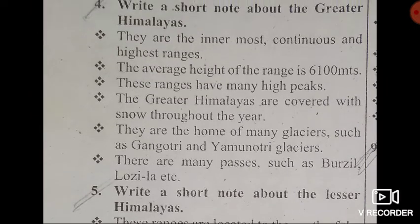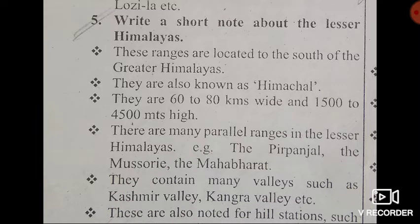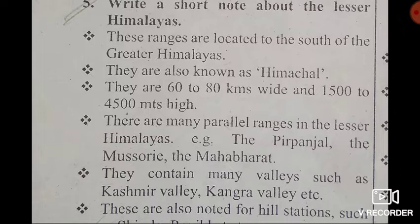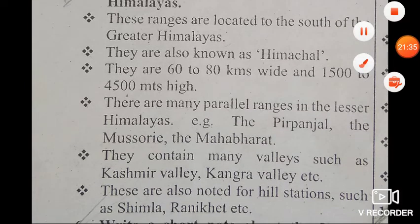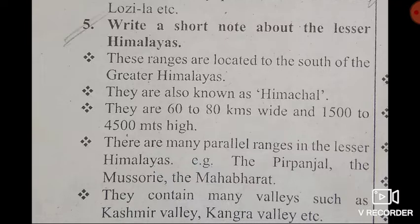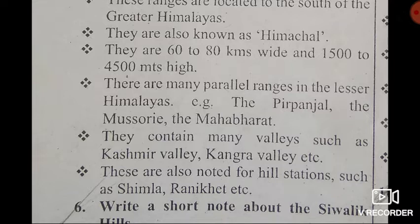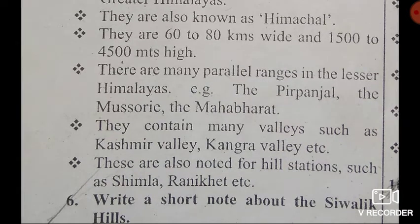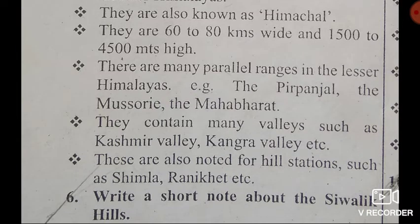Fifth question — very important: Write a short note about the Lesser Himalayas. First point: these ranges are located to the south of the Greater Himalayas. Second point: the Lesser Himalayas is also called Himachal. Third point: they are 60 to 80 kilometers wide and 1,500 to 4,500 meters high. Fourth point: there are many parallel ranges in the Lesser Himalayas, for example Pir Panjal, Mussoorie, and Mahabharata.